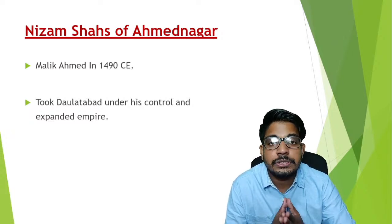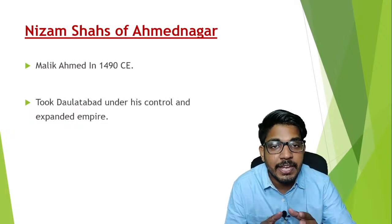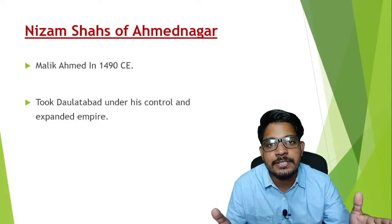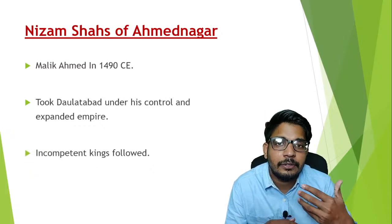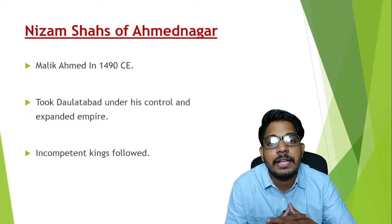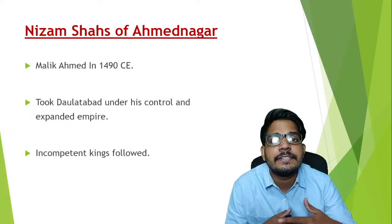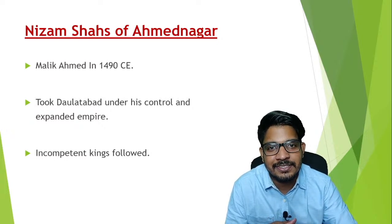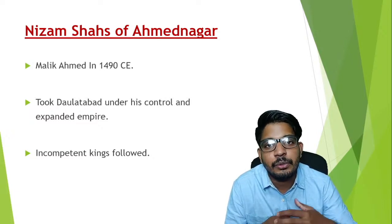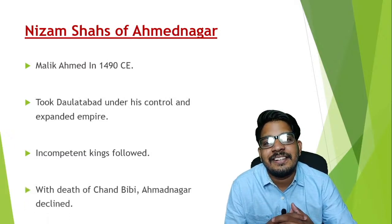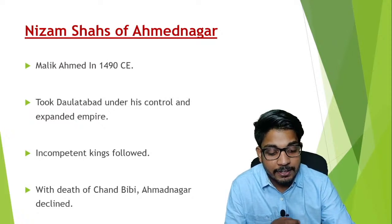Malik Ahmad took charge of Daulatabad in Maharashtra and from there expanded his principality. The same fate befell the Nizam Shahs of Ahmadnagar as the Qutb Shahs of Golconda — they couldn't last long because after Malik Ahmad, the following kings were incompetent and couldn't control their territory or provide proper governance. As a result, Ahmadnagar was annexed by the Mughals.